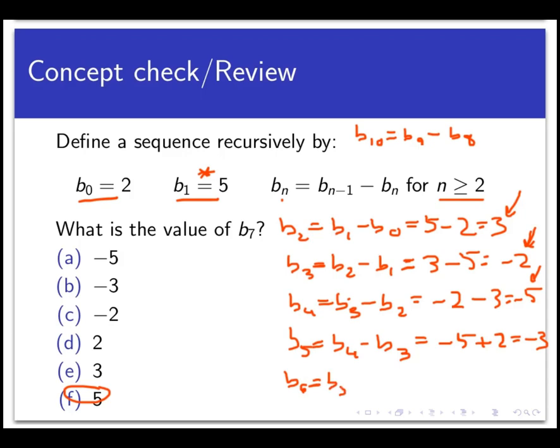b_6 is b_5 minus b_4. b_5 I just calculated to be negative 3, and b_4 was minus 5. So I'm subtracting that, which gives me a plus 2. And finally, I'll do this up here in the blue part. b_7, my target here, is b_6 minus b_5. And I have that data now to compute it. b_6 was 2, b_5 was minus 3, but I'm subtracting it, so that gives me a 5. And that's my answer.